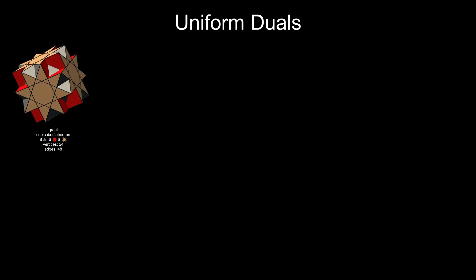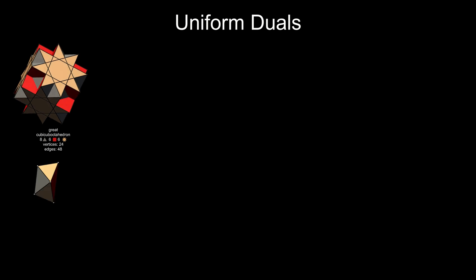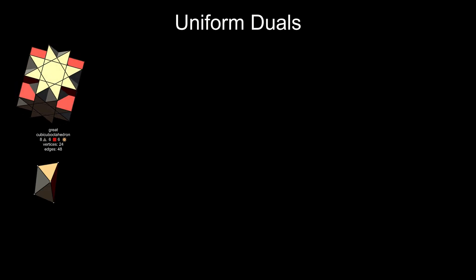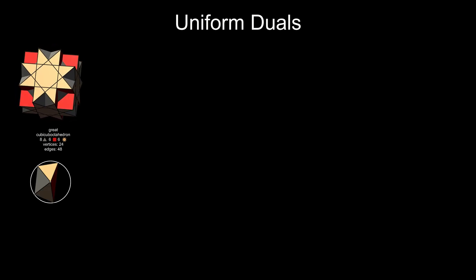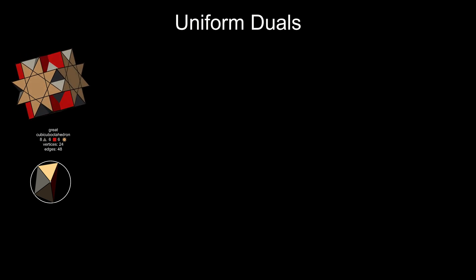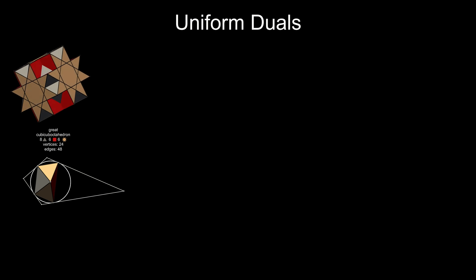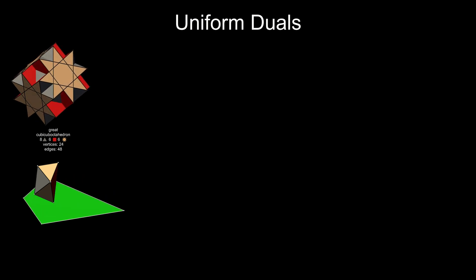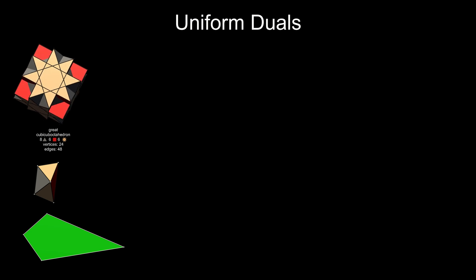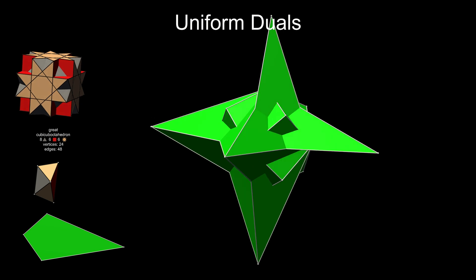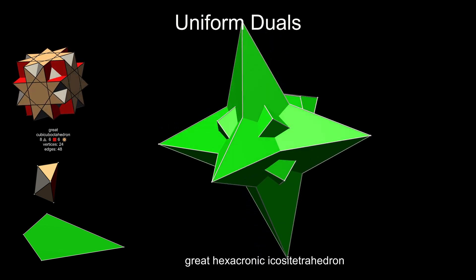We'll start with this relatively straightforward uniform polyhedron, the great cubicuboctahedron. Here's its vertex figure. If we draw a circle around the vertex figure, representing the inverting sphere, and draw tangents, we derive the dual face, which is this kite shape. Put 24 of these kites together, one for each vertex, and we get the dual figure: the great hexacronic icositetrahedron.